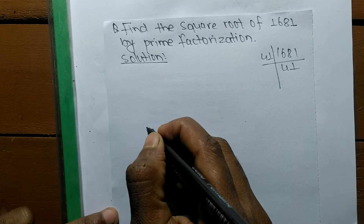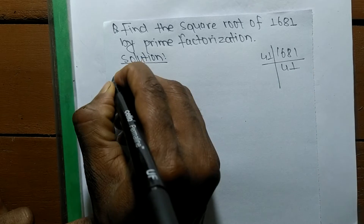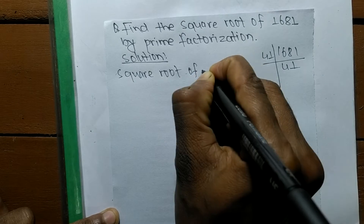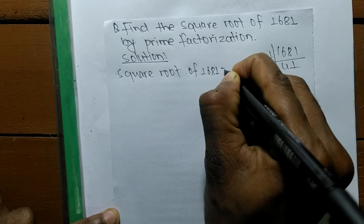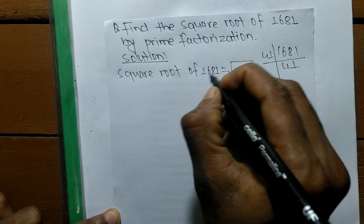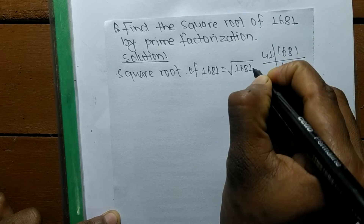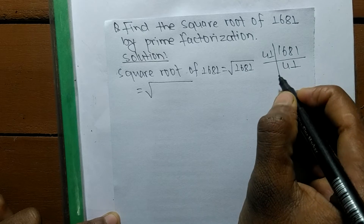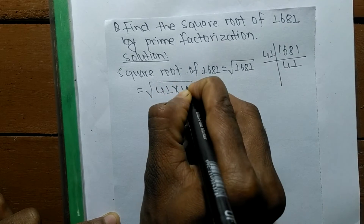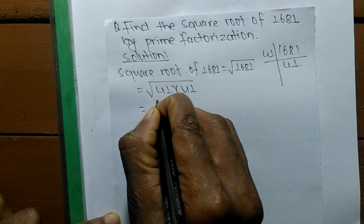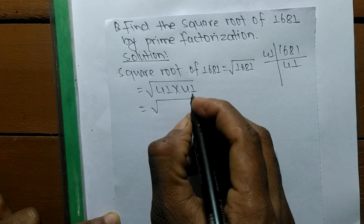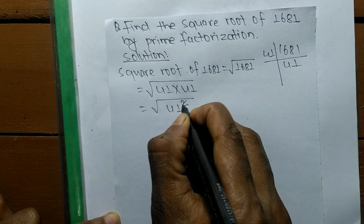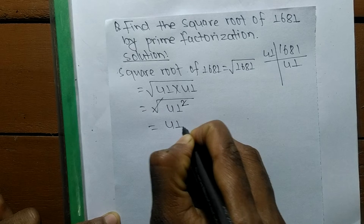Now we are finding the square root of 1681. We write the prime factors of 1681 as 41 times 41. We make these prime factors in square form — 41 times 41 means it is 41 squared. The square and square root cancel each other, so 41 comes out of the square root.